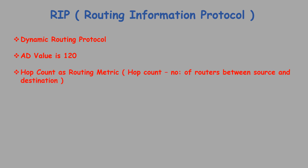RIP uses hop count as a routing metric to find the best path between the source and the destination network. Hop count means the number of routers between the source and the destination. The path with the lowest hop count is considered the best route to reach a network and is therefore placed in the routing table.